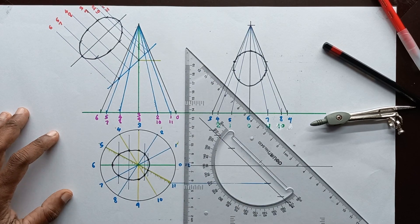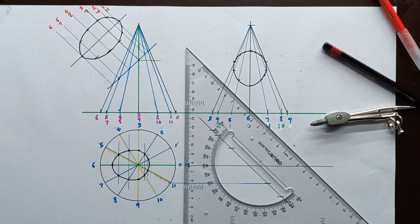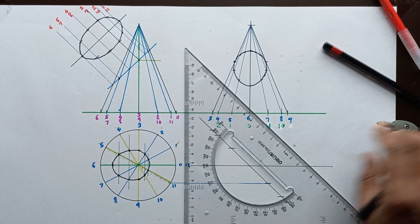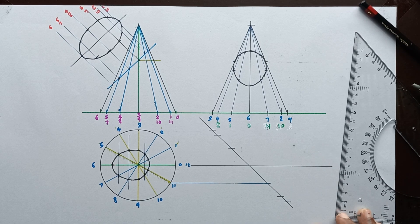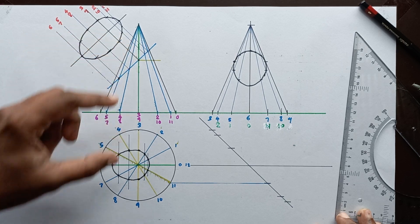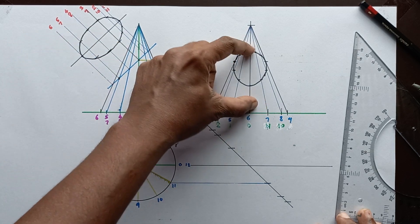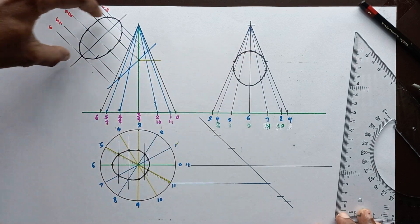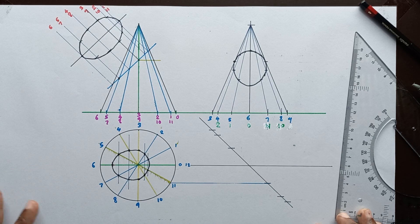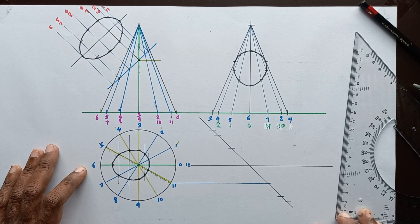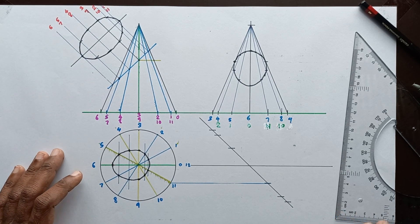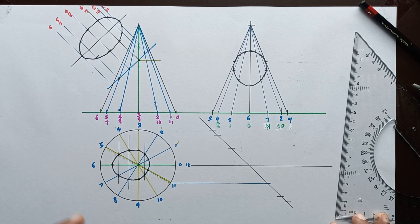As the cutting surface, we are getting this kind of ellipse. This is how we construct and draw the truncated cone front elevation, plan view, end elevation, and the auxiliary view of the cutting plane surface. Thank you, see you next time.